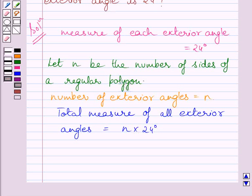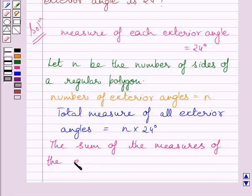Property of a regular polygon states that the sum of the measures of the external angles of any polygon is 360 degrees.